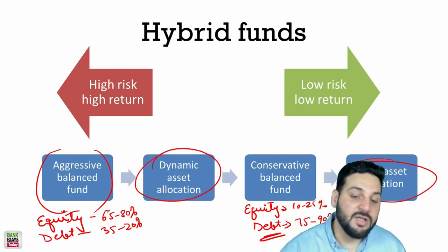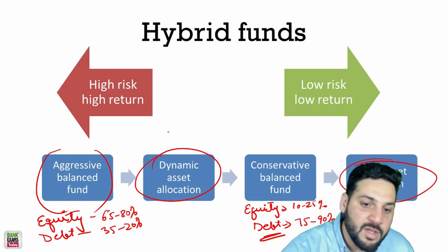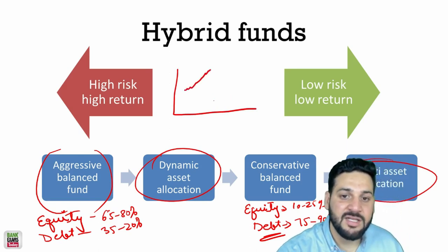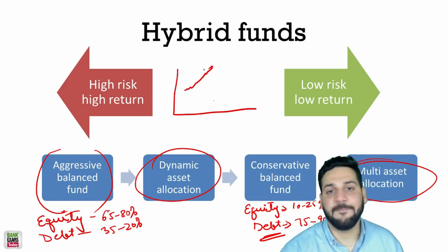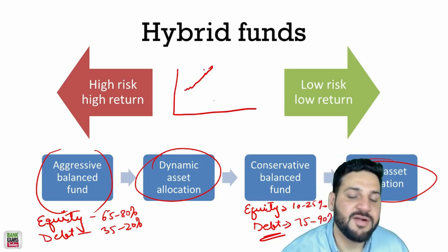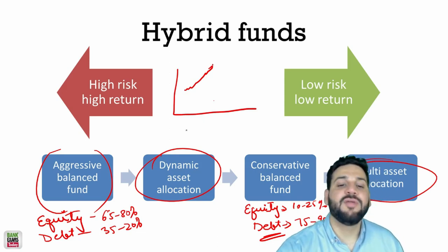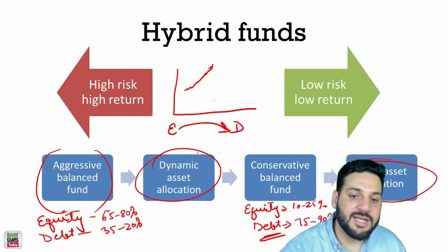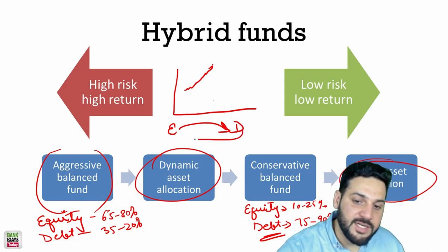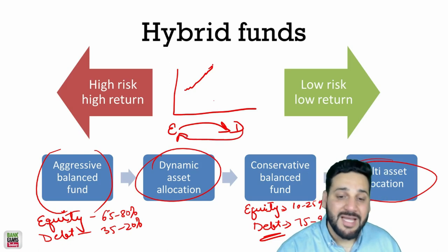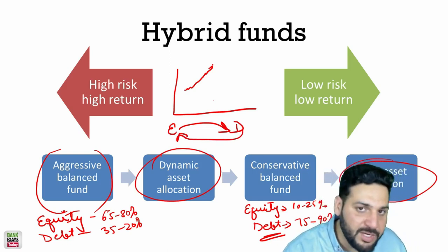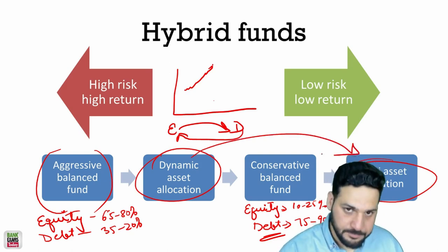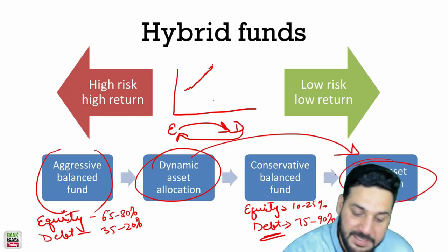Dynamic asset allocation funds involve a fund manager who shifts money between equity and debt based on market conditions. When equity markets are expensive and valuations are high, he moves money into debt. When markets crash, he moves money back into equity. Because a lot of human judgment is involved, dynamic asset allocation is riskier than multi-asset allocation funds.